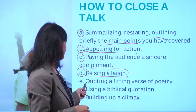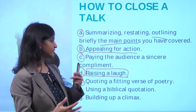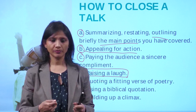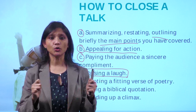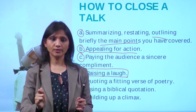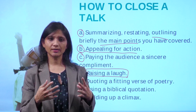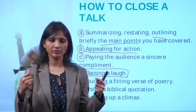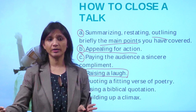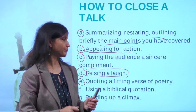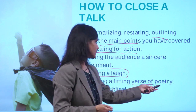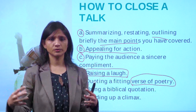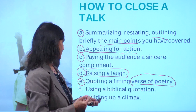You can also end by quoting a fitting verse of poetry. For example, if your speech is about beautiful things, you can say at the end: 'A thing of beauty is a joy forever.' When you quote from a poem, your audience automatically connects it to your theme — beauty, happiness, and the joy it brings. This approach requires a broad knowledge base, so you'll need to keep searching for fitting verses that suit your speech topic.